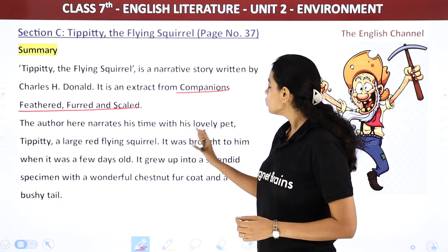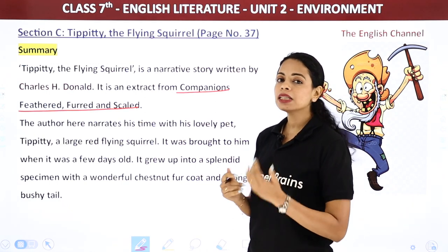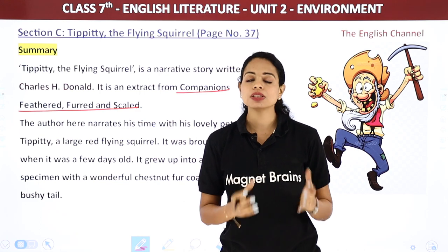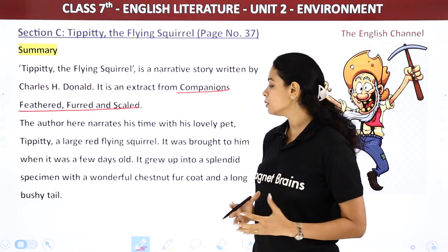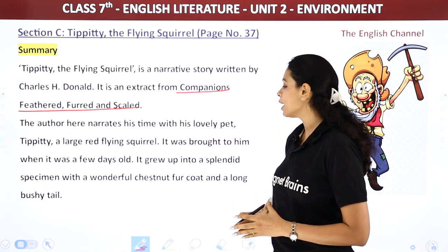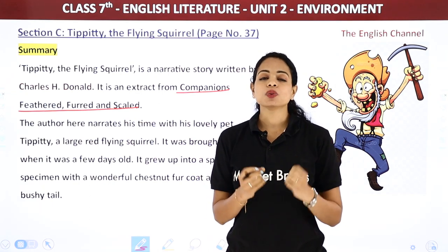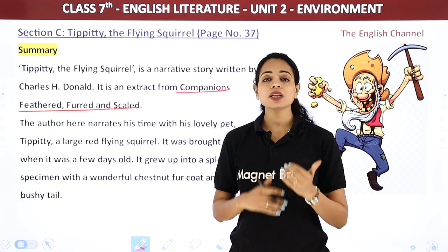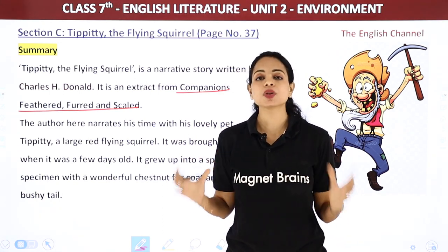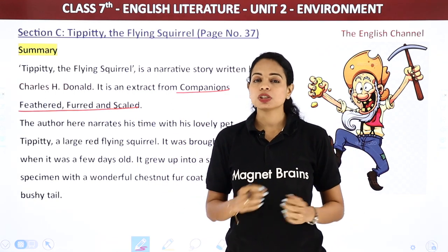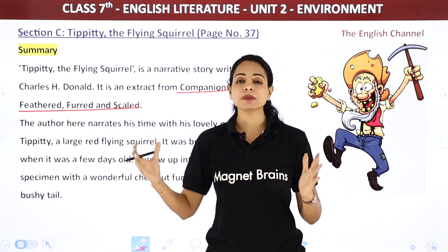It was brought home when it was a few days old. It grew up into a splendid specimen with a wonderful chestnut fur coat and a long bushy tail. When it grew up, it was a beautiful specimen — a very good-looking squirrel with a red chestnut fur coat and a two-feet-long bushy tail.